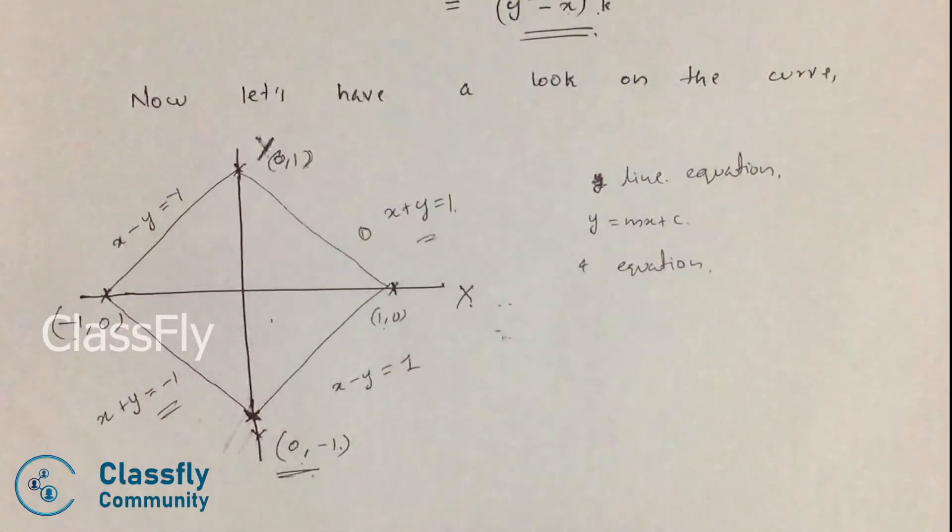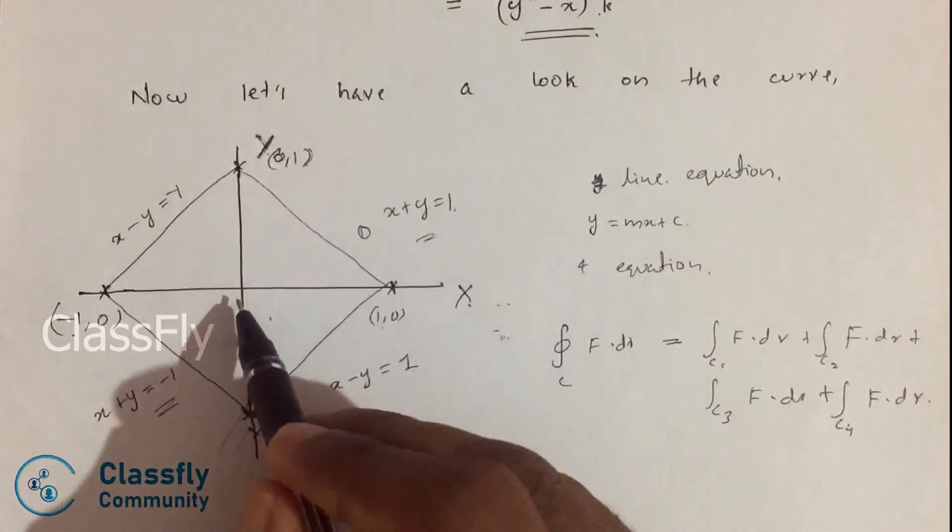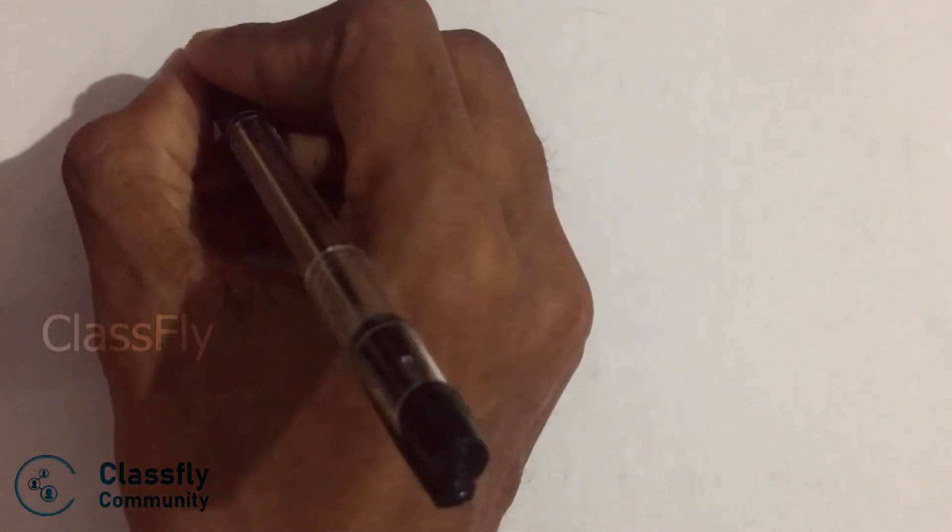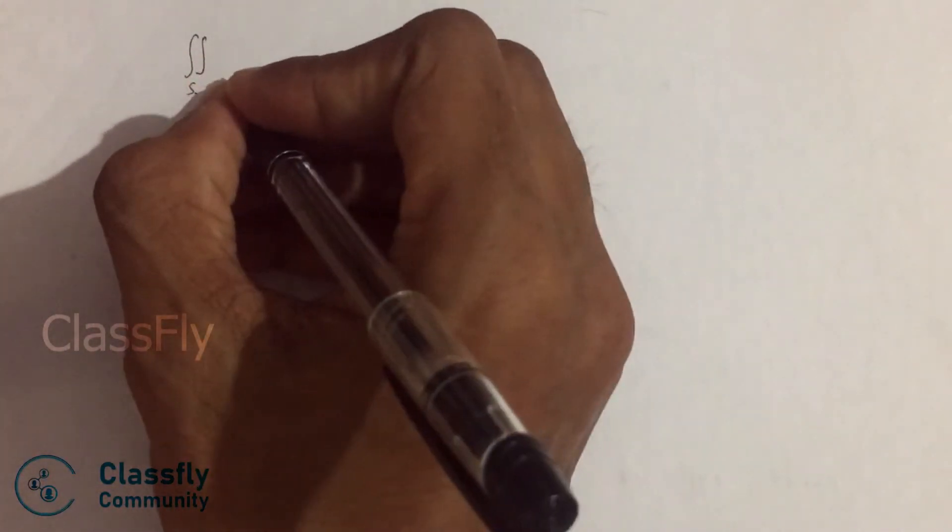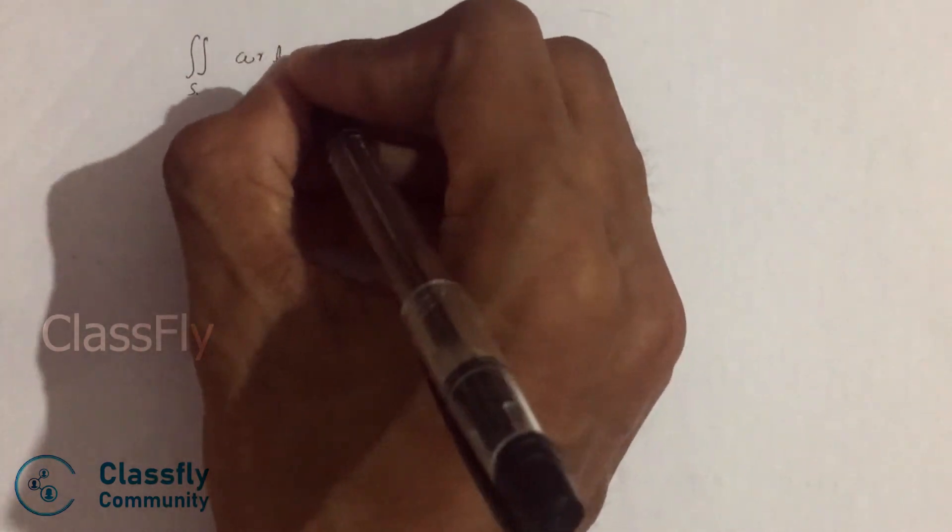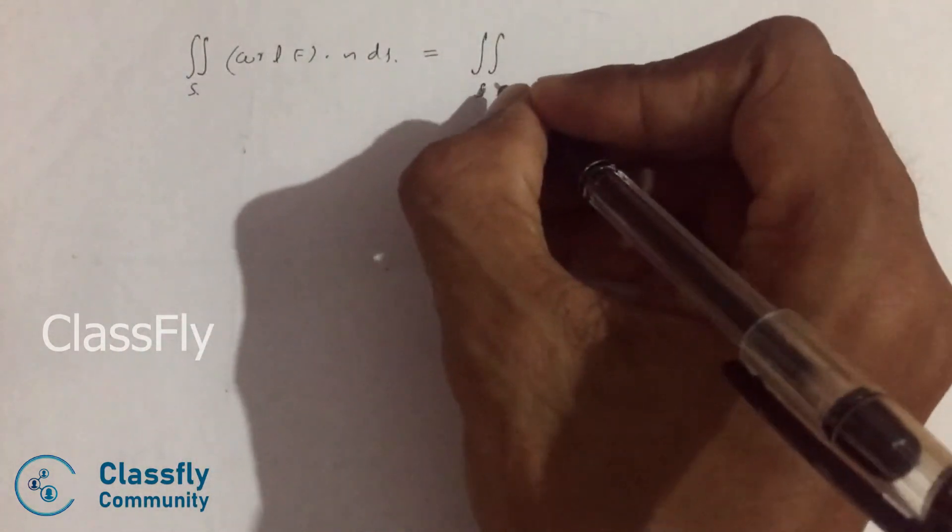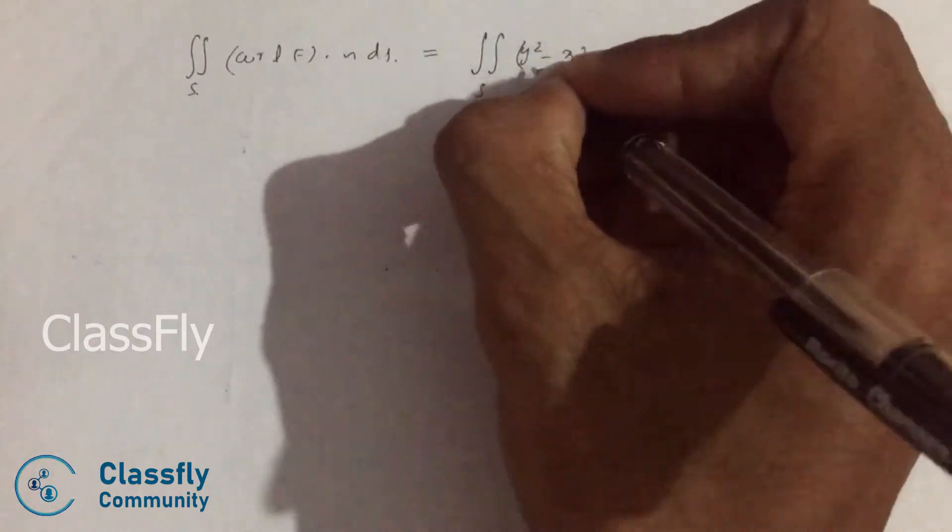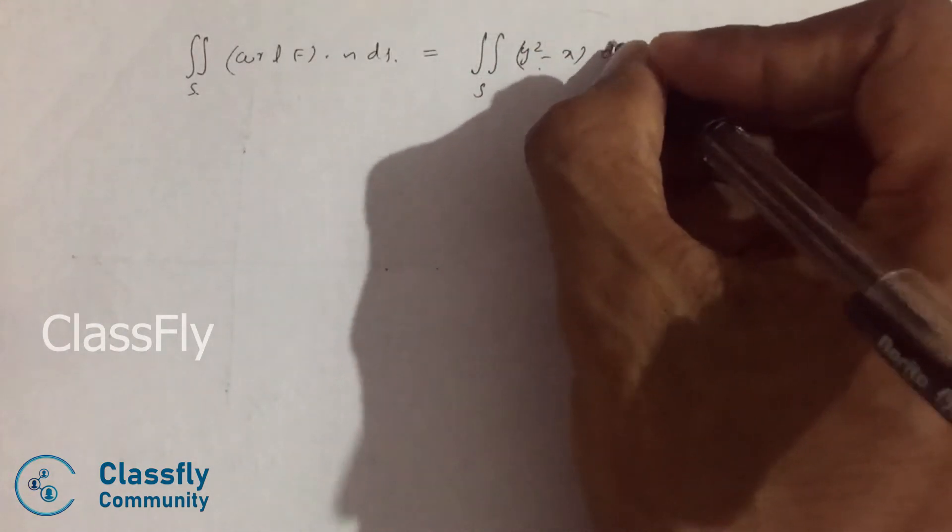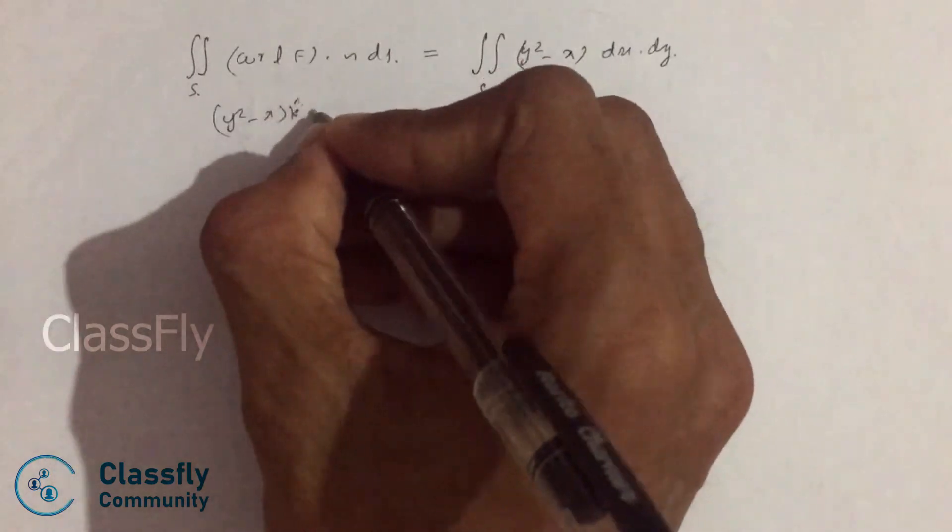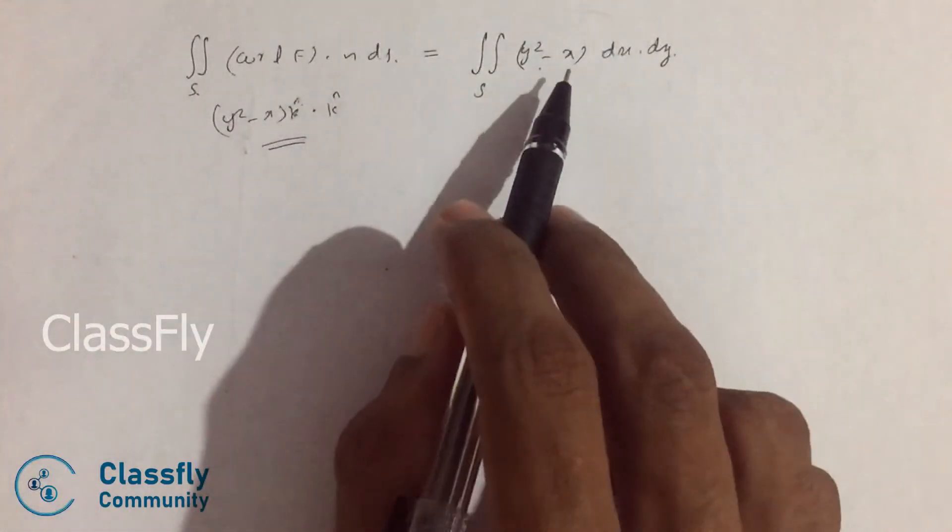So we have four equations. Since all of these are equal in area, we can simply write this as 4 times integral c1 F dot dr. So we have double integral over the surface (y squared minus x) dx dy.